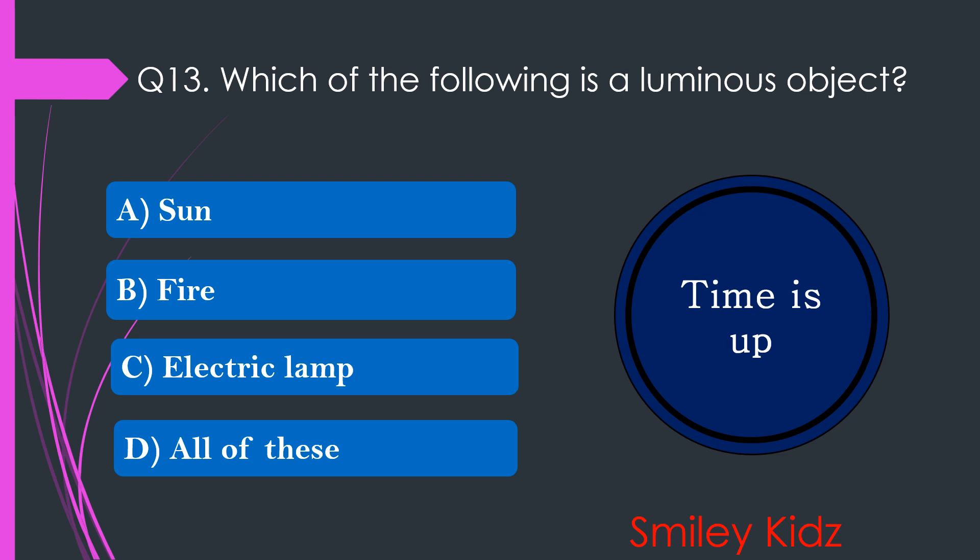Your time is up and the right answer is option D. All of these. Sun, fire, and electric lamps are luminous objects.